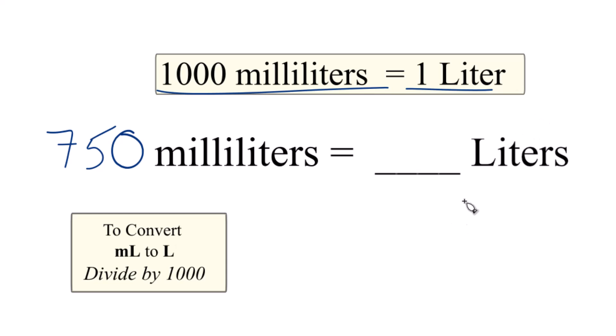So what we're going to do to convert from milliliters to liters, we're going to divide by a thousand. And you probably can tell 750 divided by a thousand, that's 0.75. So when we convert 750 milliliters to liters, we get 0.75.